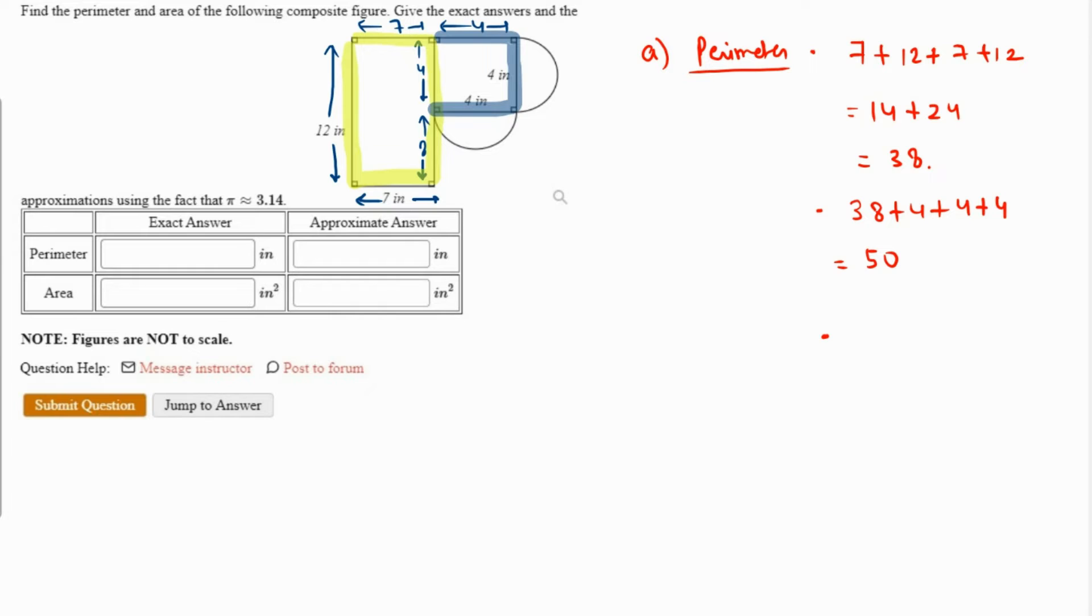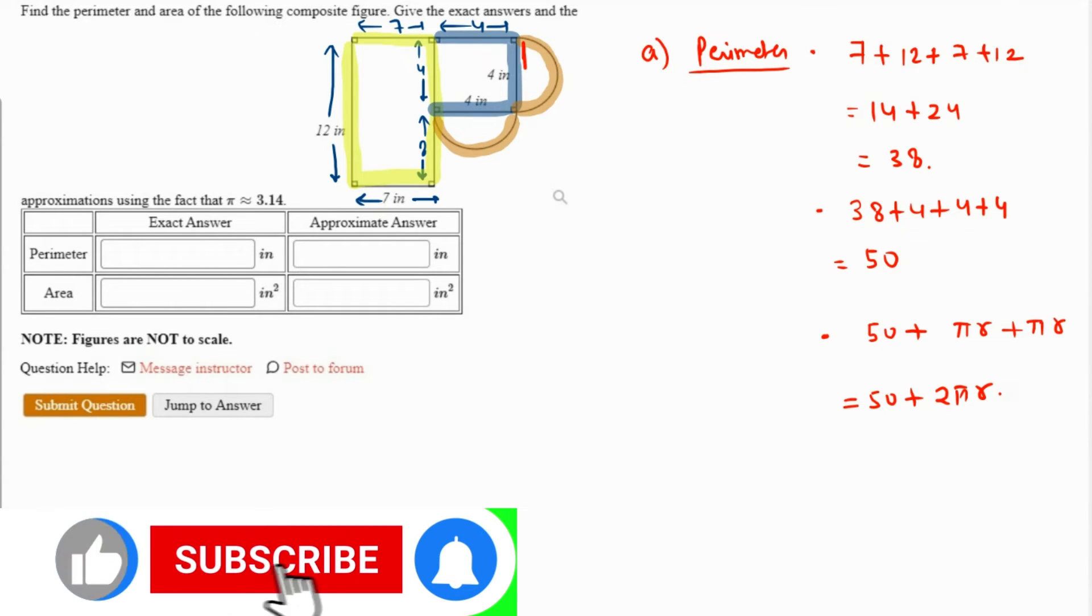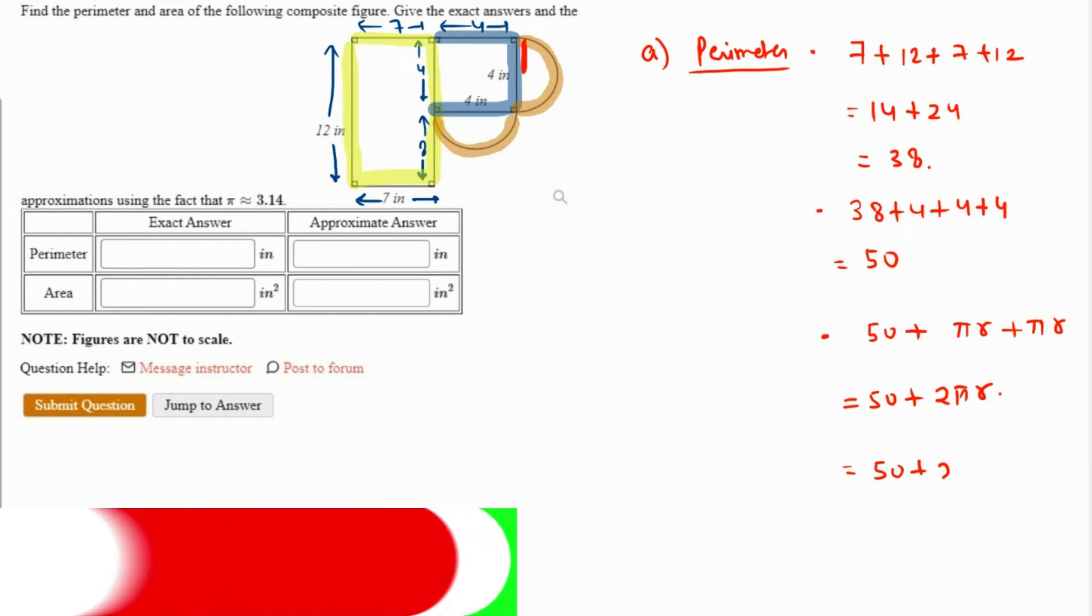And then I'm going to add the last part, which are the curved parts, the two semicircles. Two semicircles are nothing but one complete circle. The length of the semicircle is πr because the complete circle is 2πr, so semicircle is πr. So that's πr plus πr. That will be 50 plus 2πr, and what is r? r will be half of 4, which is nothing but 2. So 50 plus 2π times 2, that will become 50 plus 4π.